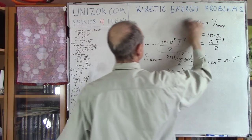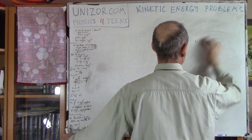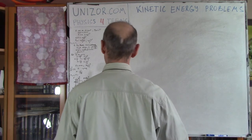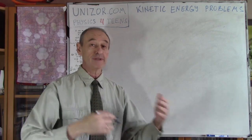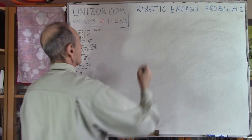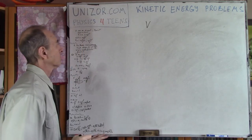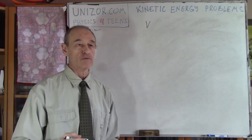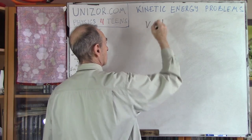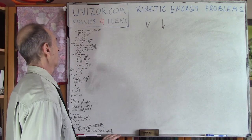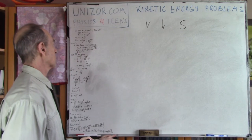Next problem. Now instead of accelerating, we are decelerating the car. Assume the car moves with speed V, then the driver sees an obstacle and applies the brakes. The speed goes down, and the car stops completely after distance S.